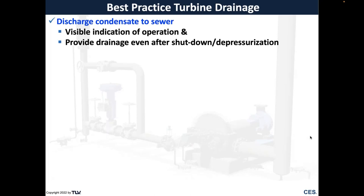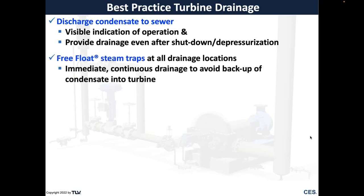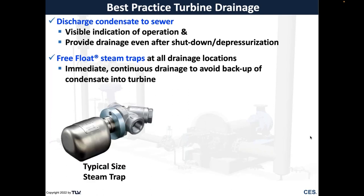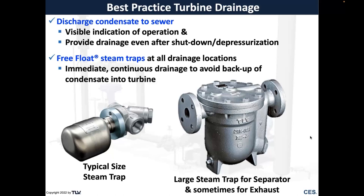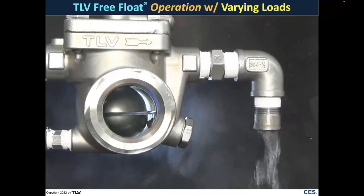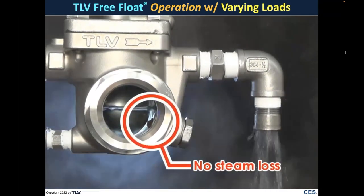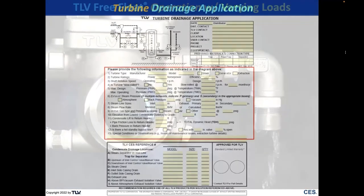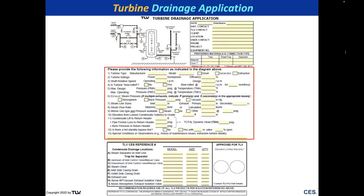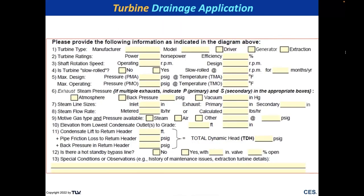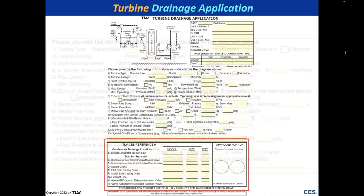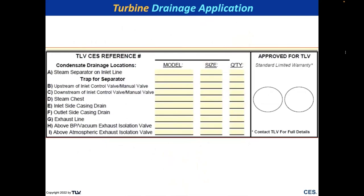For turbines, discharge condensate to the sewer for visible indication of operation and drainage after shutdown and depressurization — especially if manual open is not performed. We prefer free-flow traps for immediate, continuous drainage to avoid condensate backup into the turbine. The free float keeps a water seal and responds instantaneously, which is why we use free-float drain traps. For every turbine application, we complete a TDA (Turbine Drainage Application) form — the customer fills in key data and we make model selections, typically at no charge.